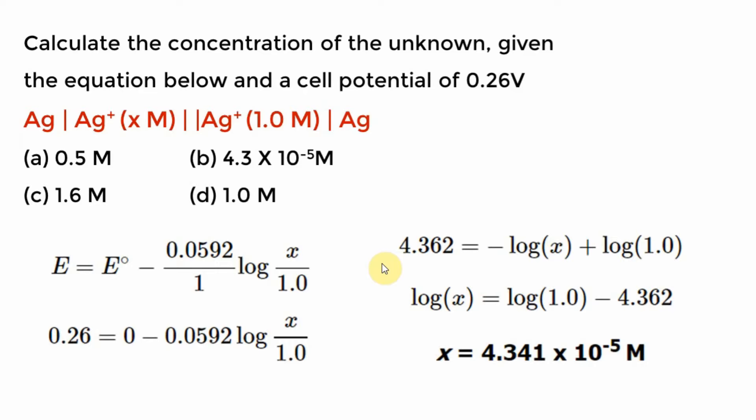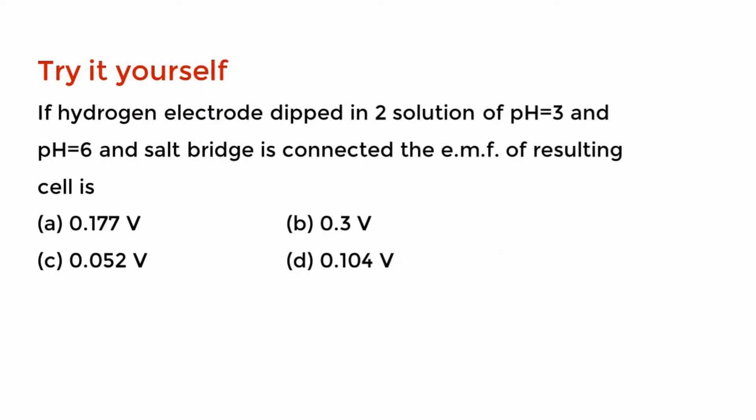I advise you to do the calculation yourself and verify. Here is a final question to try: a hydrogen electrode is dipped in two solutions with pH = 3 and pH = 5, meaning [H⁺] = 10⁻³ and [H⁺] = 10⁻⁵. Write down the cell equation, identify your reactants and products, set up the Nernst equation. You will get the answer easily — 10⁻³ and 10⁻⁵ are straightforward to work with logarithmically.